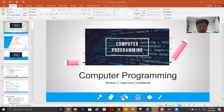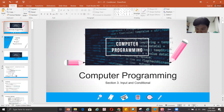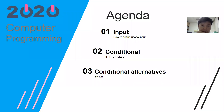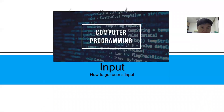Hello again, this is the course of Computer Programming and we are entering Section 3 about Input and Conditional. The topics we are going to learn in this chapter include how to define user input and conditional if-then-else. One conditional alternative we will learn about is switch. Input is one of the important things in computer programming.